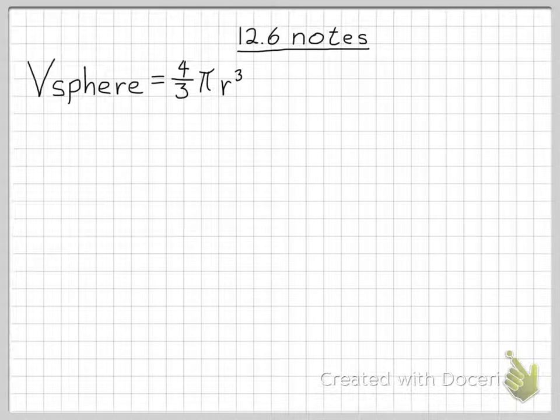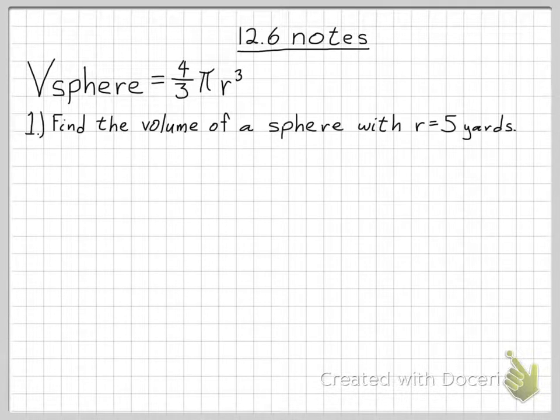The volume of a sphere, the formula for the volume of a sphere is 4 thirds pi r cubed where r is the radius of the sphere. Let's do a problem based on this. Find the volume of a sphere with radius equals 5 yards.